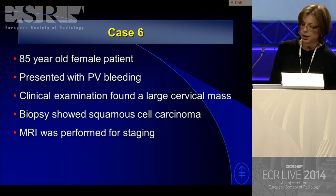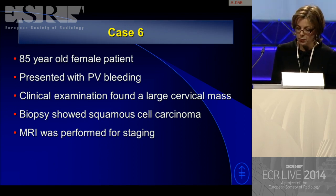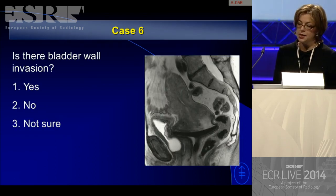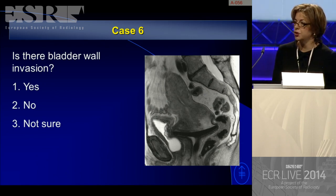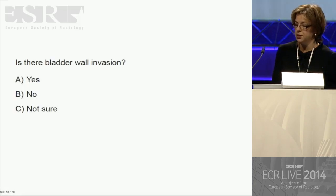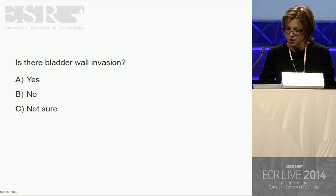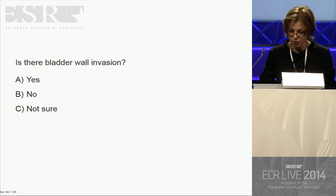Case six: an 85-year-old female presenting with vaginal bleeding. Clinical examination found a large cervical mass; biopsy shows squamous cell carcinoma of the cervix. MRI is performed for staging. The key question: is there bladder wall mucosal invasion? Mucosal invasion would be FIGO stage 4A. FIGO is a clinical staging system — stage 4A is based on cystoscopy.